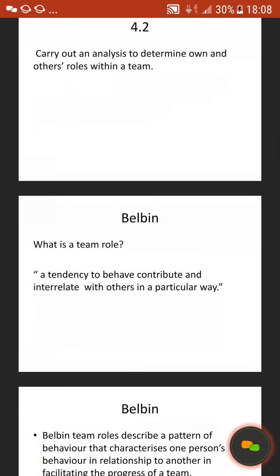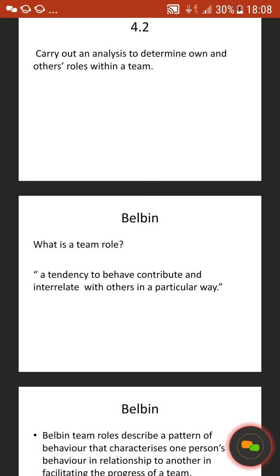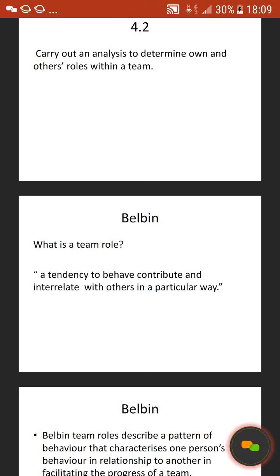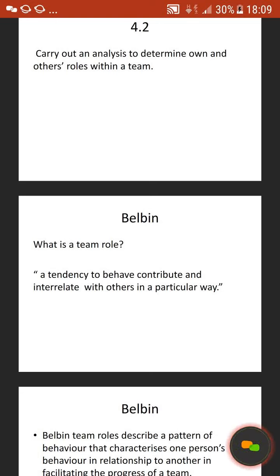What is a team role? Belbin suggests that it's a tendency to behave, contribute and relate with others in a particular way. Belbin's team role describes a pattern of behaviour that characterises one person's behaviour in relationship to another in facilitating the progress of a team. Basically, how you behave will affect other people's behaviours — you'll all bounce off each other, get on, or argue. It's going to have a knock-on effect. Belbin suggests that action roles fall into three domains.